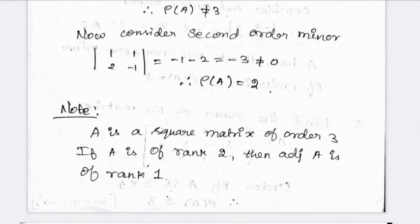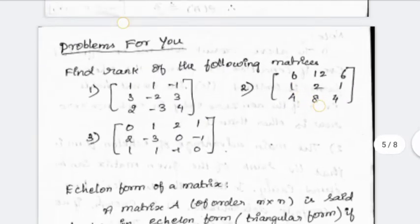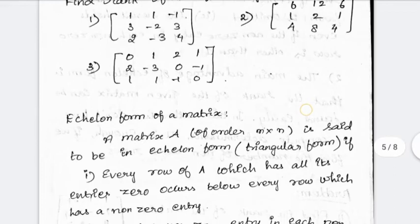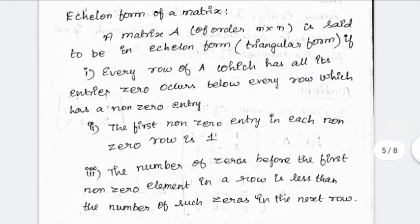For a square matrix of order 3: if A is of rank 2, then adj(A) is of rank 1. The square matrix is 3×3 and has rank 2, so adj(A) has rank 1. Next, we will go to the second method, which is the Echelon form of a matrix. This method will be easier once you learn it.